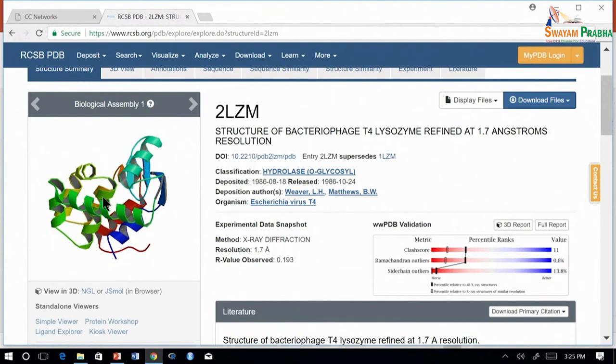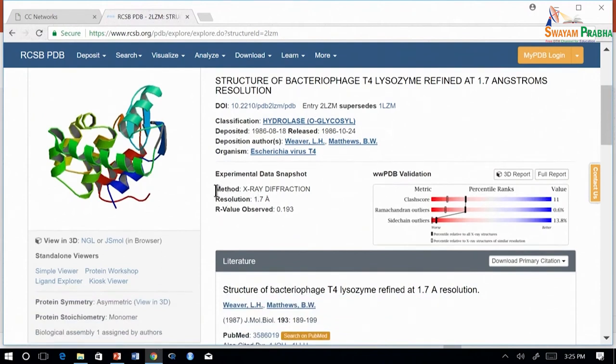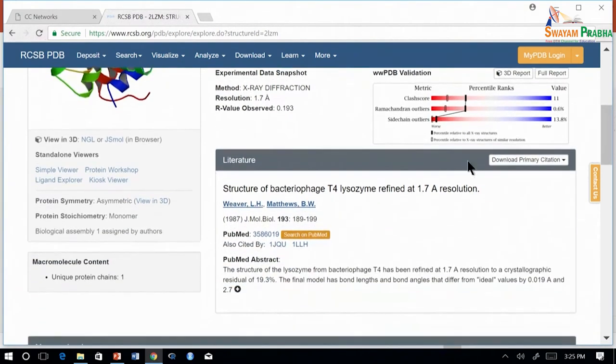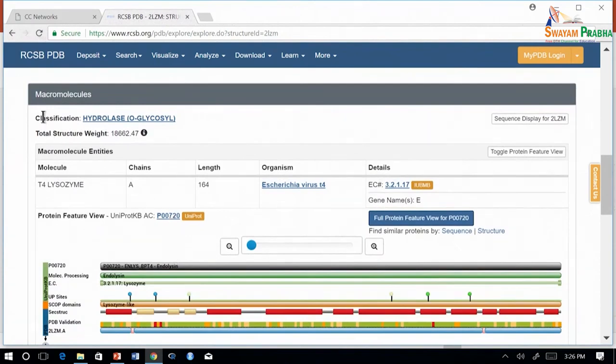For example, this structure is classified as a hydrolase. The experimental method which was used to get this structure is x-ray diffraction and the resolution is 1.7 angstroms. PDB also provides a literature reference from which the structure was taken. Further you can find the macromolecules in the structure. In this structure we have only one entity, that is the T4 lysozyme. This is identified as chain A and it has 164 residues.